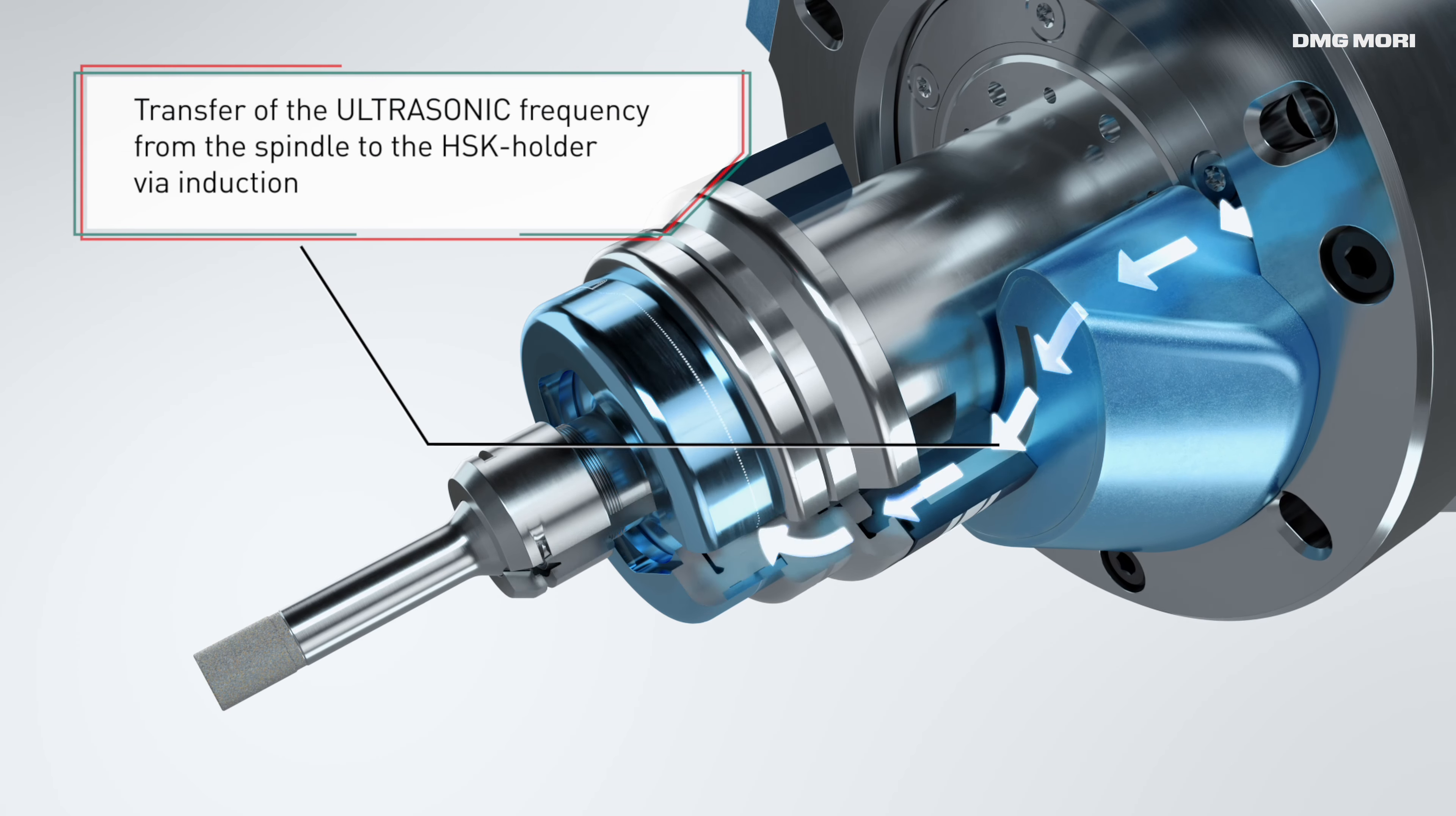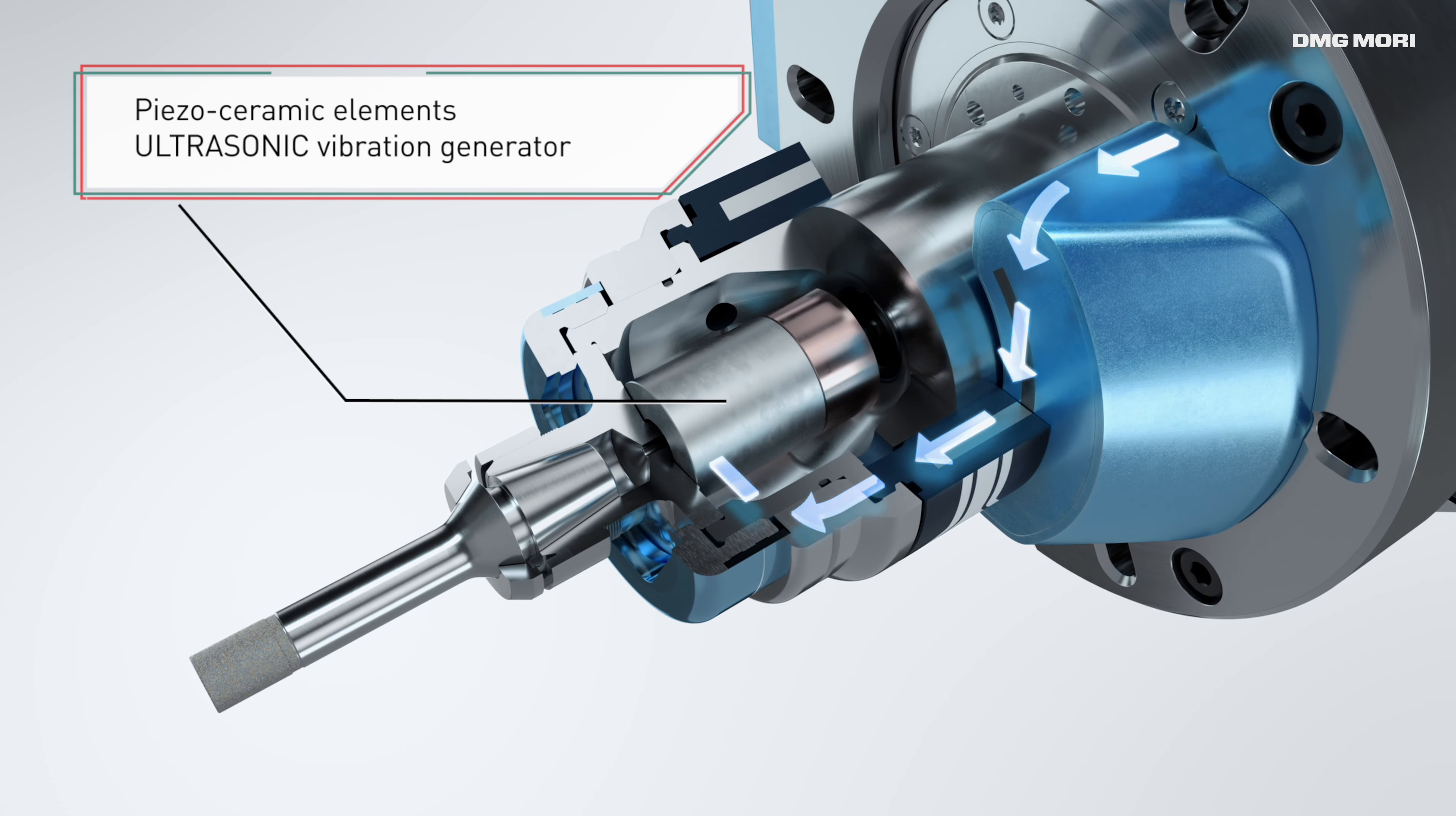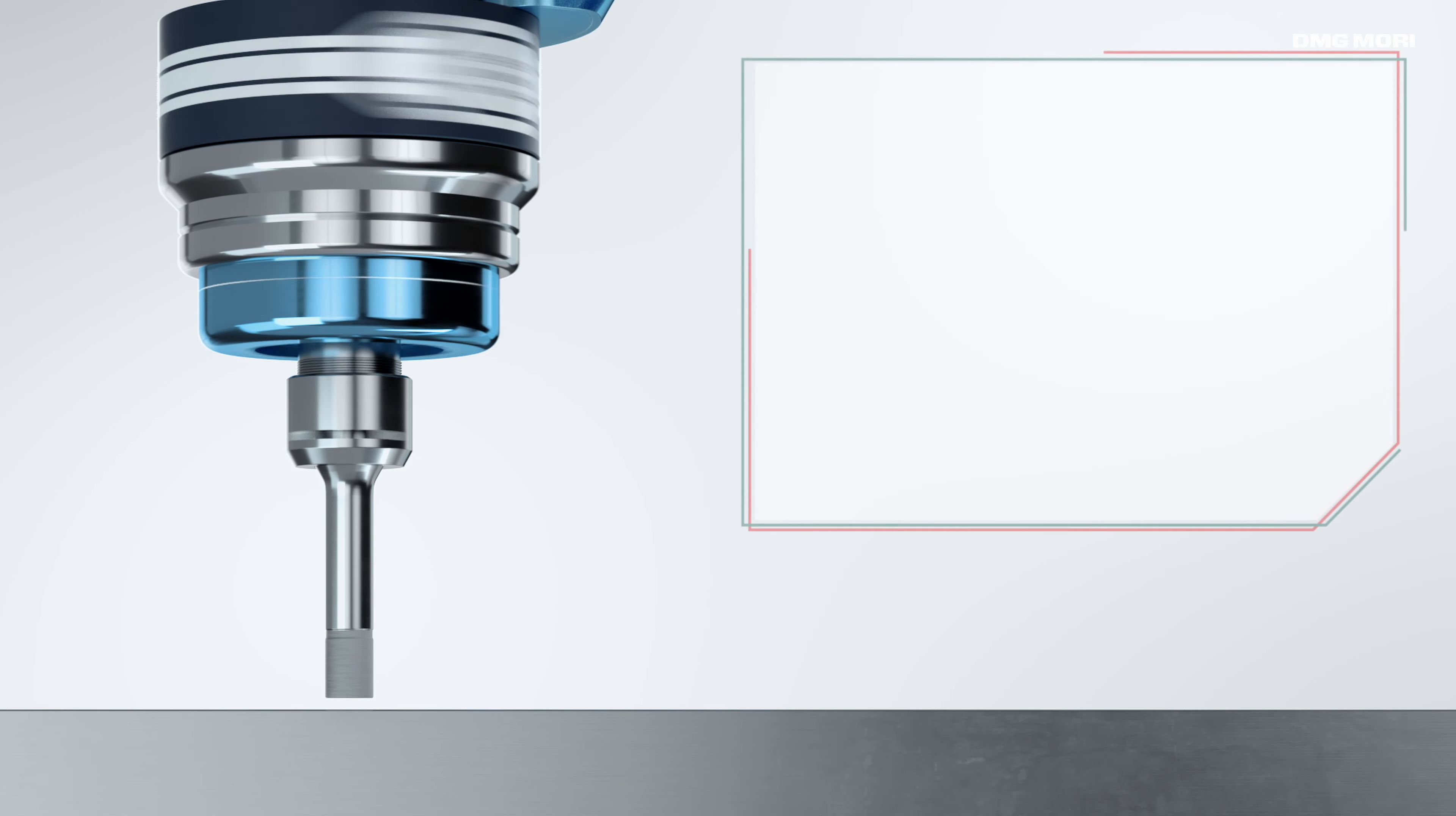Inductive transmission generates an oscillation in the ultrasonic actuator that superimposes the tool rotation movement with an amplitude of up to 15 micrometers.